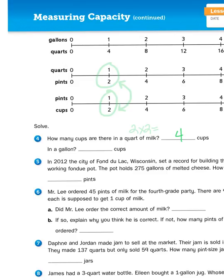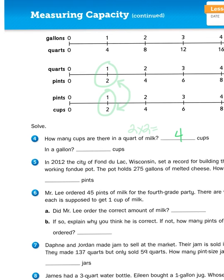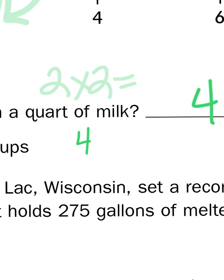Now, if there are 4 quarts in a gallon, and there are 4 cups in every quart, I would then multiply the number of cups per quart by the number of quarts per gallon, and that would give us the number of cups per gallon. 4 times 4, you got it, 16.